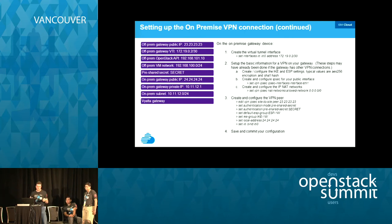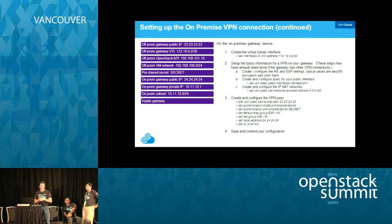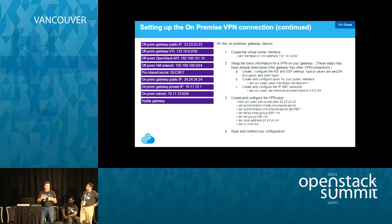Step one: create the virtual tunnel interface — specify what interface you're going to use and what your local tunnel side will be. Step two: set up the VPN basics — Internet Key Exchange (IKE) and Encapsulating Security Payload (ESP). These settings need to be configured in advance and must be consistent with whatever your off-premise is going to use — coordinate with them to ensure they're consistent. Step three: configure the VPN itself — the site-to-site connection. You need your public IP address, their public IP address, IKE, ESP, the shared secret, and the virtual tunnel interface. Commands for Vyatta are listed; other platforms have equivalent steps.